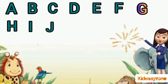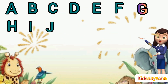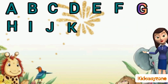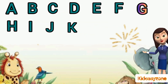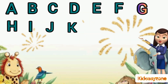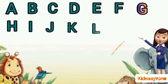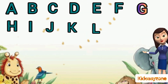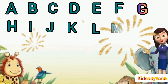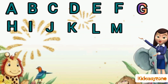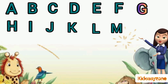J is for juice. K is for kite. L is for lion. M is for monkey.